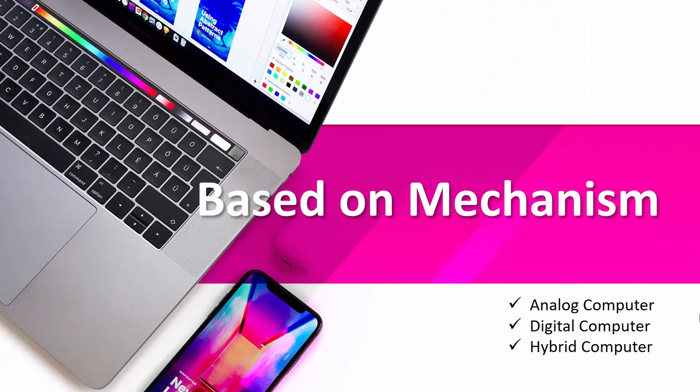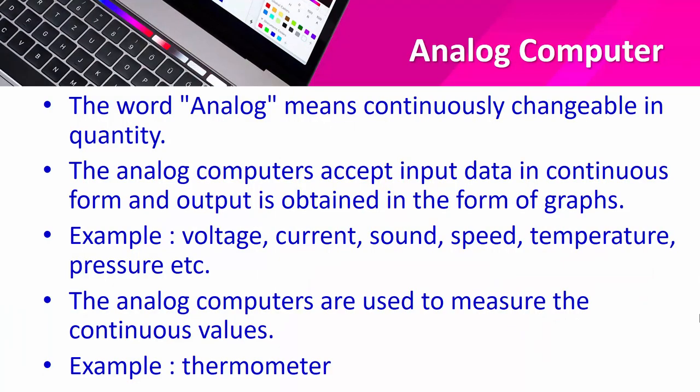Now let me explain another type of computer — based on mechanism — which includes analog computer, digital computer, and hybrid computer. The word 'analog' means continuously changeable in quantity; analog means data in a continuous form that continuously changes.